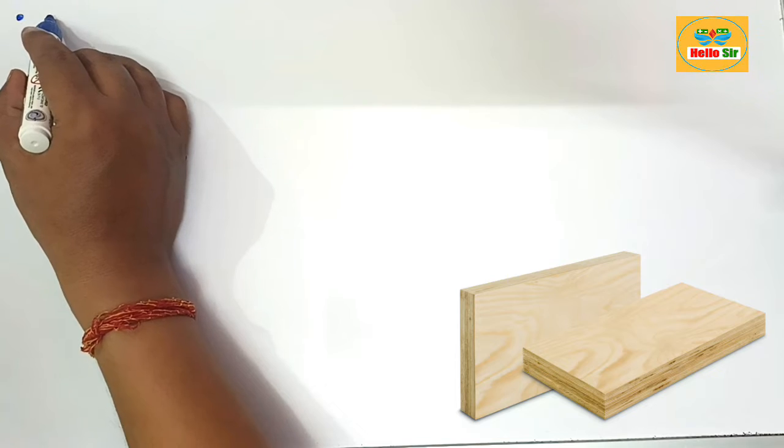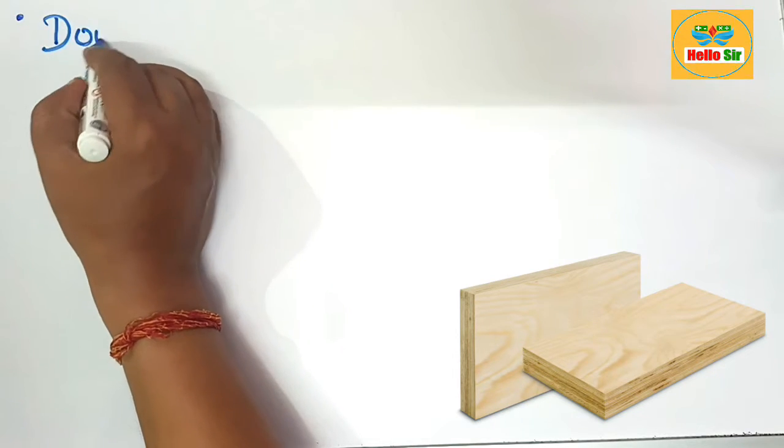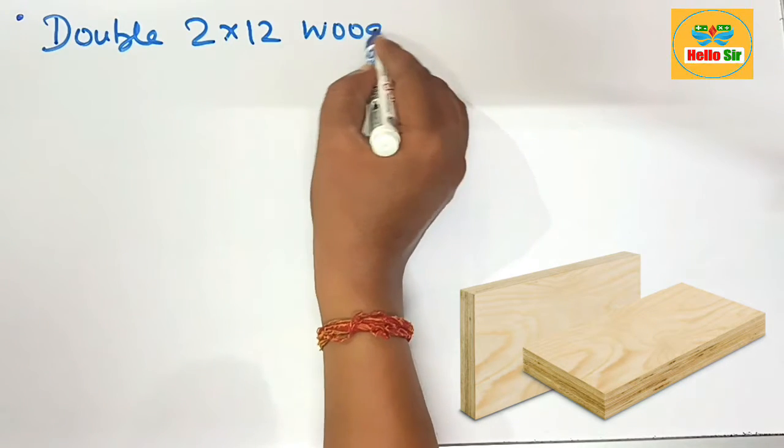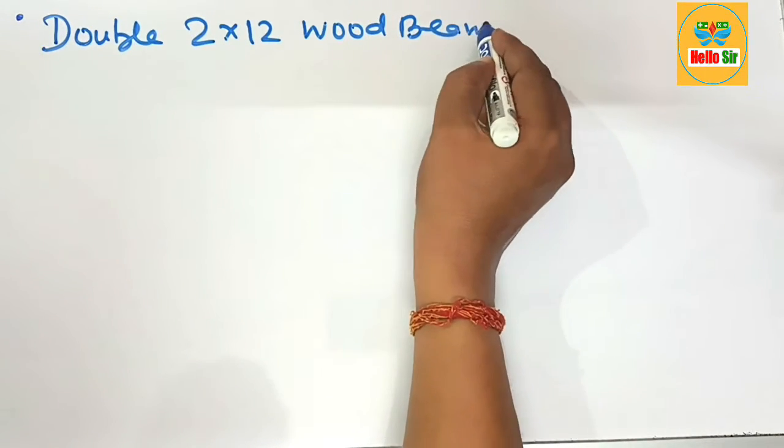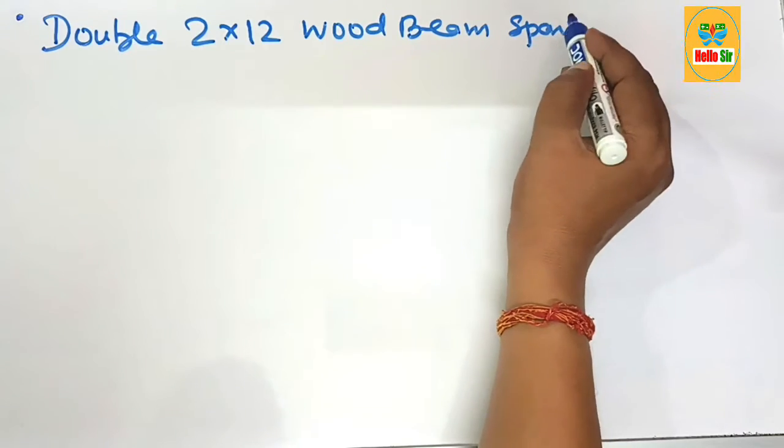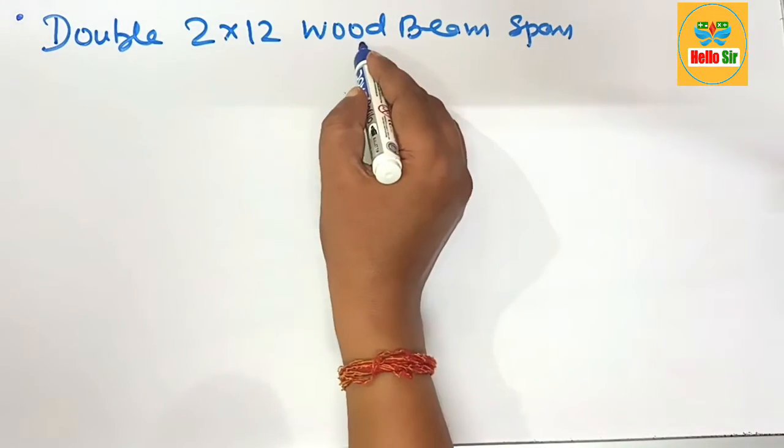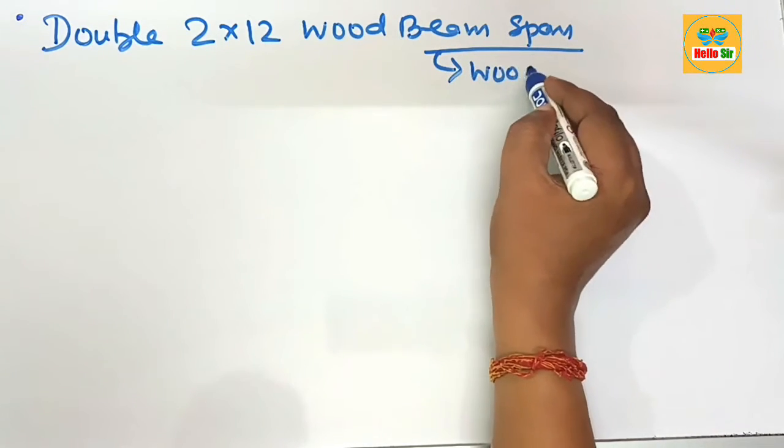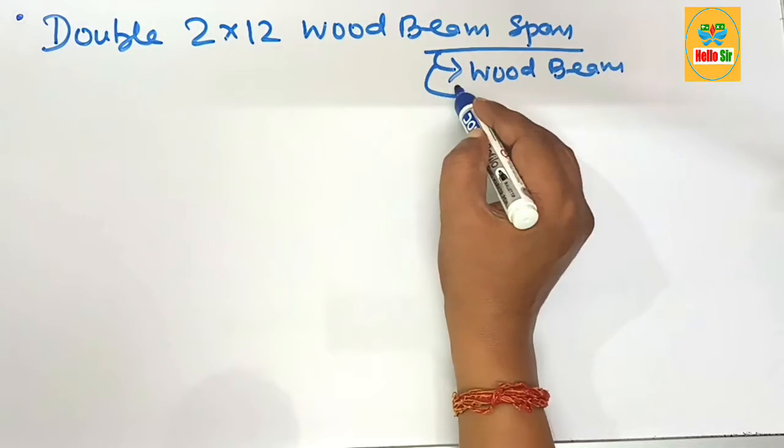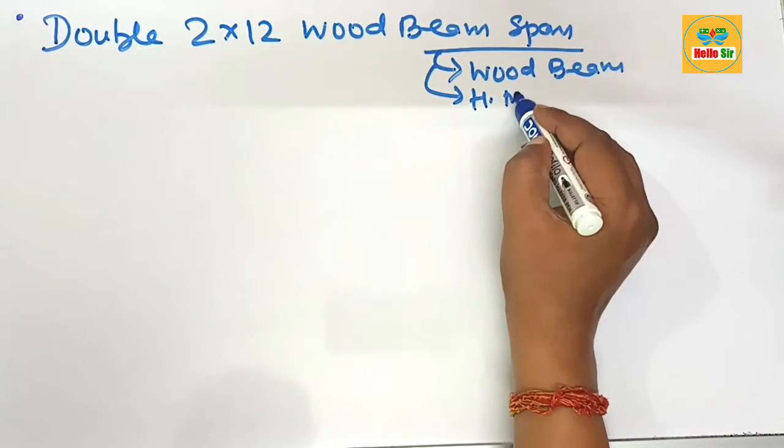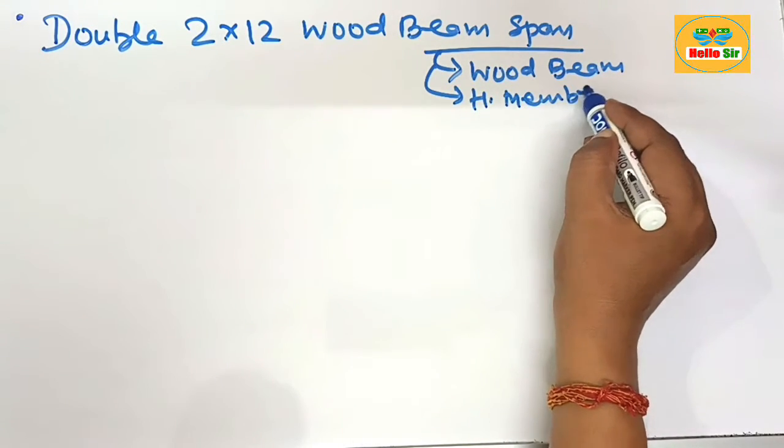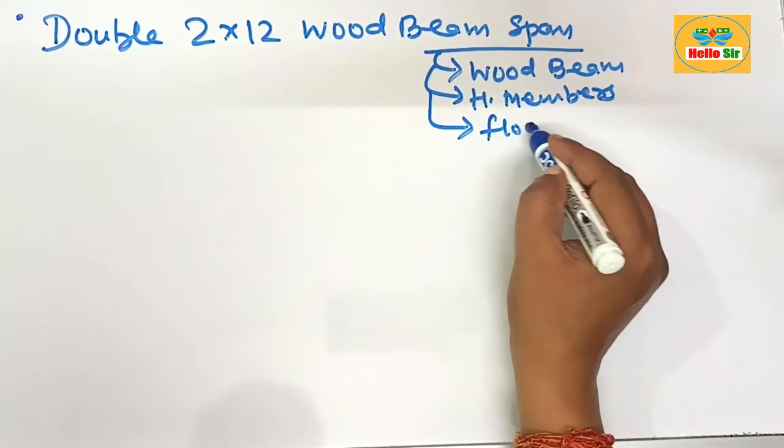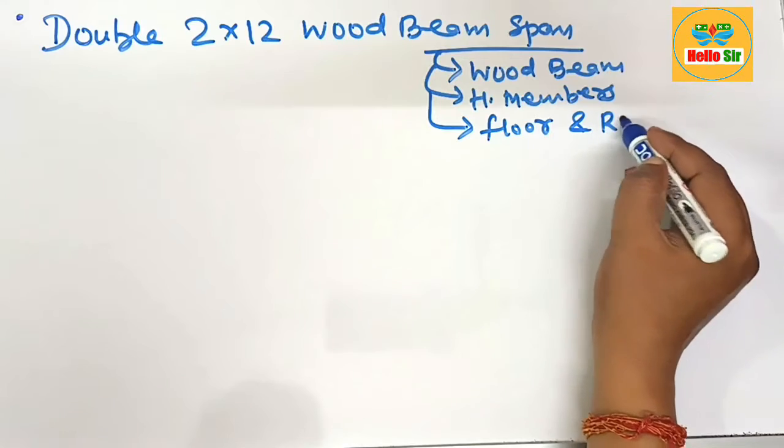In this video, you will know about a double 2 by 12 wood beam span. It means how far can a double 2 by 12 wood beam span? The beam is a horizontal member in roof framing systems and it supports the loads coming from your floor area and your roof area.